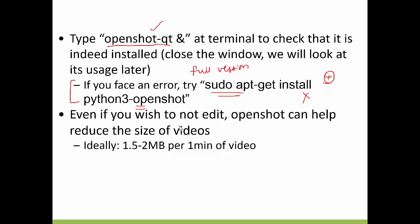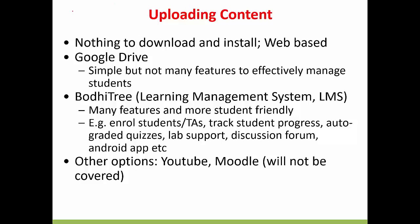OpenShot not only does editing, but it can also help reduce the size of videos. For example, if OBS is producing very large file sizes, you can run those files through OpenShot to reduce them further. Typically you want about 1.5 to 2 megabytes per one minute of video — that should be your end goal. If you are seeing very large file sizes like 10 MB per minute, you have to do something to reduce the size. OpenShot is a good tool for this, because if file sizes are very large, your students will have difficulty downloading your lectures.